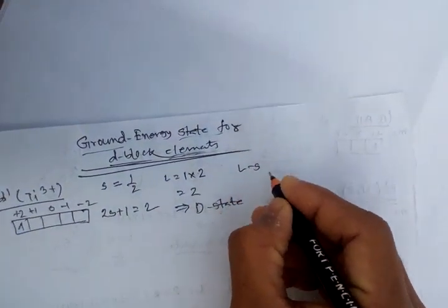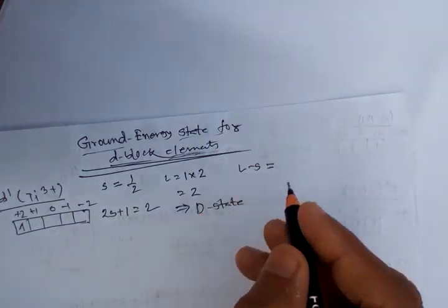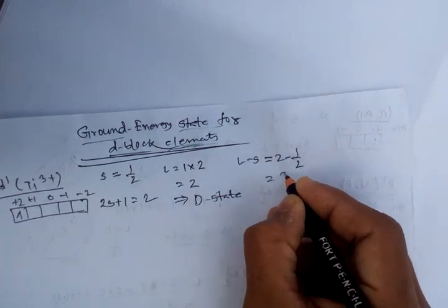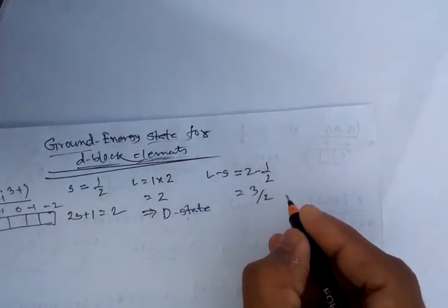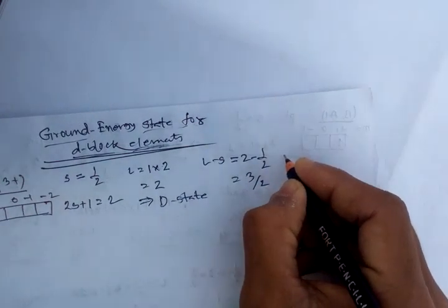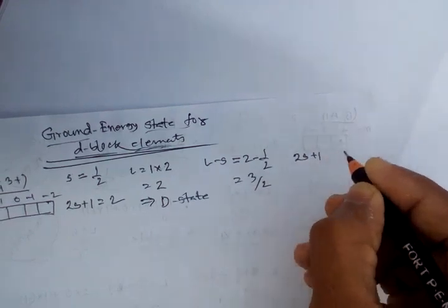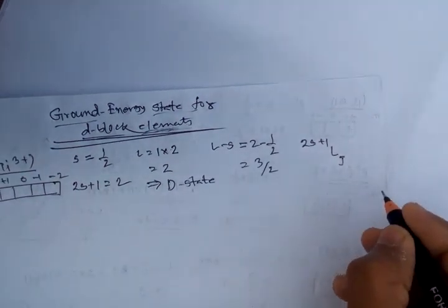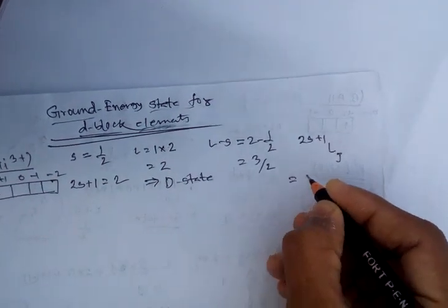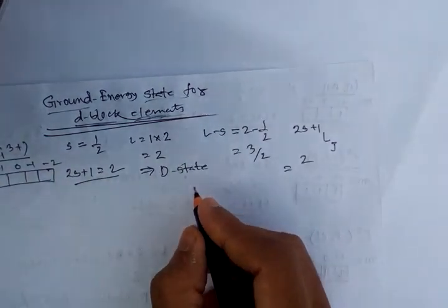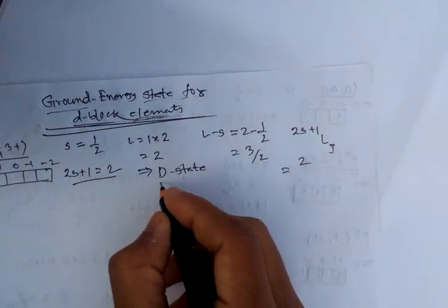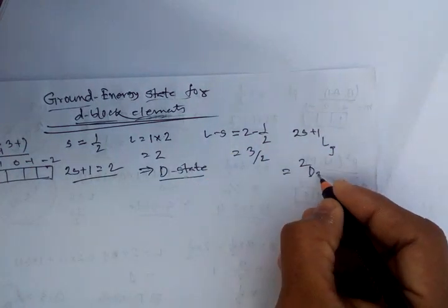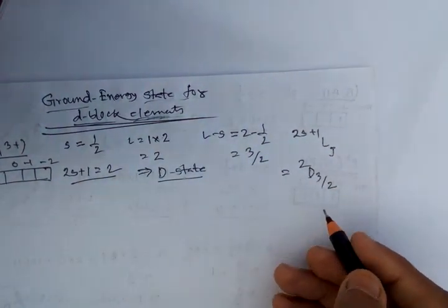This orbital is less than half-filled, so we count J = L − S. L is equal to 2, S is equal to 1/2, so J = L − S = 3/2. The ground energy state term symbol is 2s+1 = 2, L is the D state, and J = 3/2, giving ²D₃/₂ as the ground state.